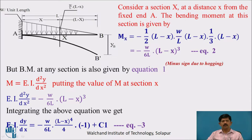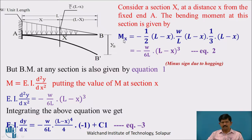We consider a section at a distance x from the fixed end, so the remaining portion is L minus x. Taking the bending moment at this section x from the free end: the load is the triangular part, and the value at the section of this triangle is W/L × (L − x). The bending moment Mx equals minus one-half × (L − x) × (W/L) × (L − x), acting at one-third (L − x). Solving this gives Mx = −W/(6L) × (L − x)³. This is equation 2.